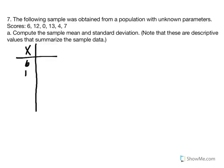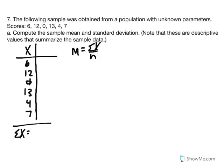I'll list my X values: 6, 12, 0, 13, 4, and 7. The mean equals sum of X over n. Summing this column gives us 42, and we have 6 scores. So 42 divided by 6 gives us an average of 7. To calculate standard deviation, I need to calculate the sum of squared deviations, then variance, then standard deviation.